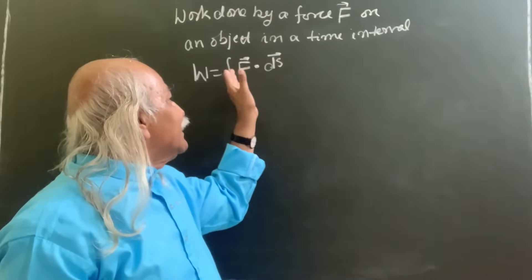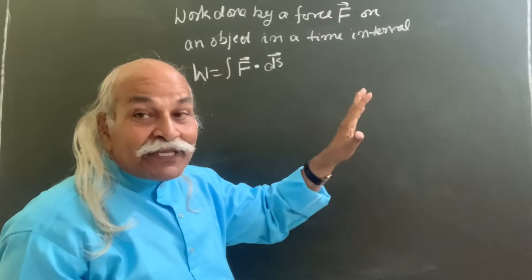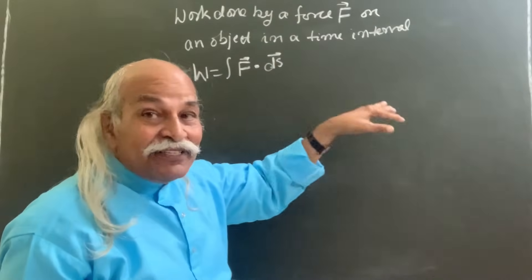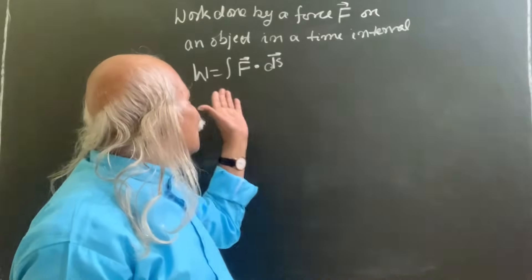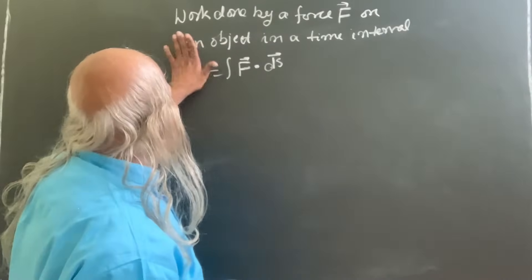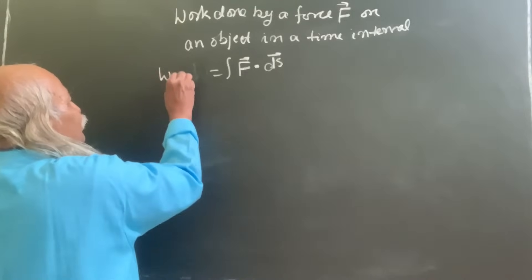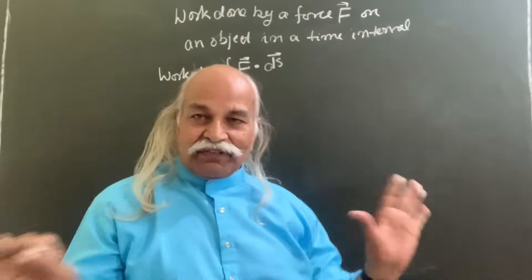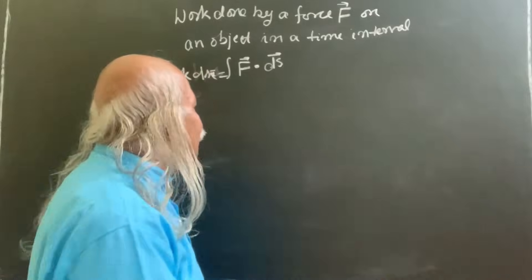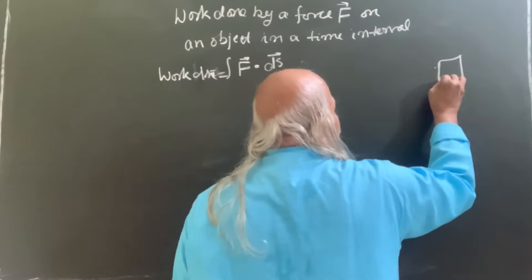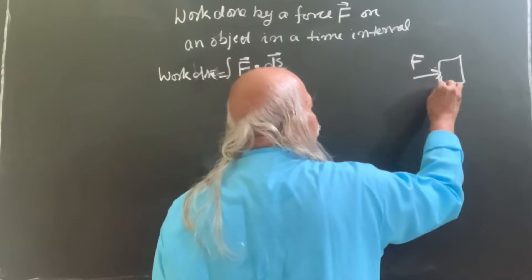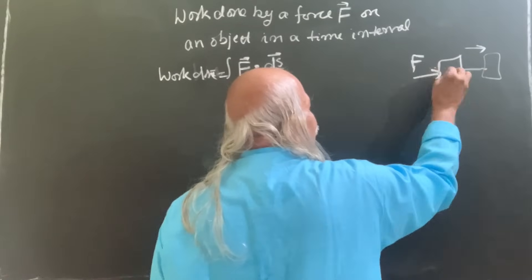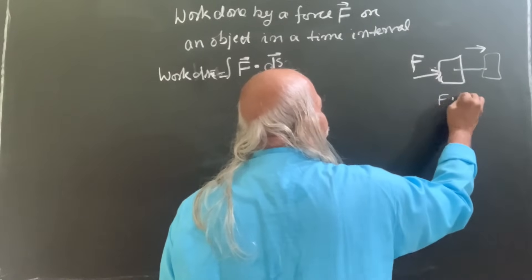So if the force is in the same direction as the displacement — force on the object by someone, and then displacement of the object — then the work done W is positive. This is universal, no question about that. If you have an object and on this object there is a force and there is a displacement in the same direction, F dot ds will be positive. So work done by the force or the agency applying the force on this object is positive.